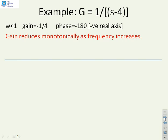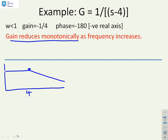You can see there's an s in the denominator, a single pole, no zeros. So clearly the gain must reduce monotonically as frequency increases. If I do my Bode diagram for the gain and put in my corner frequency of four, you're going to get a Bode diagram that looks a little bit like this. The low frequency gain we said was a quarter.